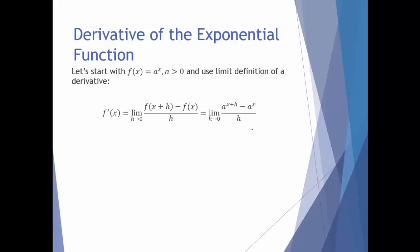When we did the limit definition of a derivative on polynomials and radical functions, a lot of times we could just algebraically manipulate the expression so that we canceled our h and then directly substituted 0. But looking at that numerator, I'm highly suspicious that won't be possible for this particular function, so I'll have to get a little more creative.